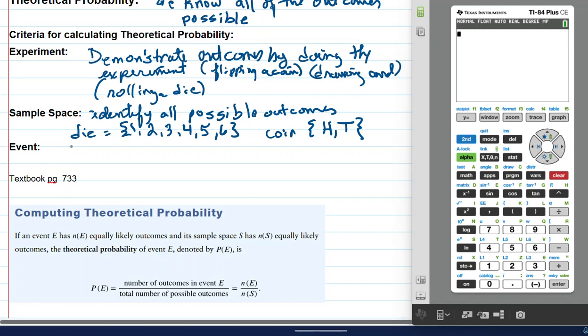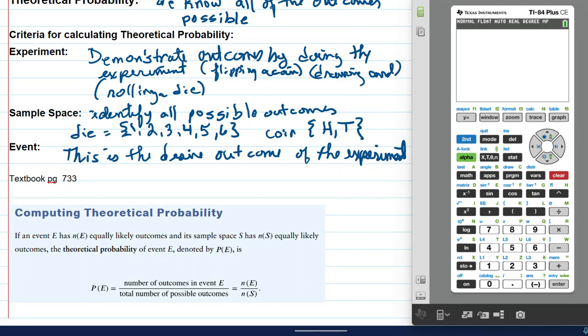So, an event is the desired outcome of the experiment. In other words, I want to flip a coin and it to be heads. I want to roll a die and get a six. I want to get a five-card dealt to me that has all spades. All right. Those things are the event. And that is a unique calculation of quantities, which we just discussed using the counting principle, the permutation and combinations, if it's necessary.